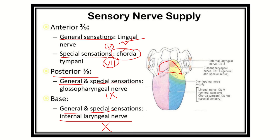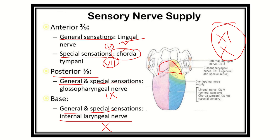So cranial nerve five, seven, nine, and ten are all related to the sensory and motor supply of the tongue. For motor supply, two nerves are involved: the hypoglossal nerve, cranial nerve twelve, which supplies all muscles of the tongue except the palatoglossus, and the vagus nerve, cranial nerve ten, which supplies the palatoglossus.